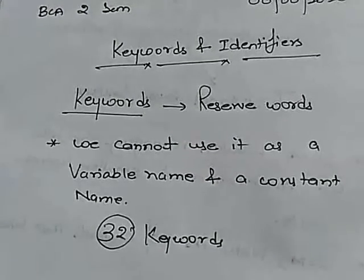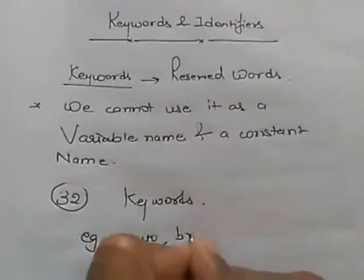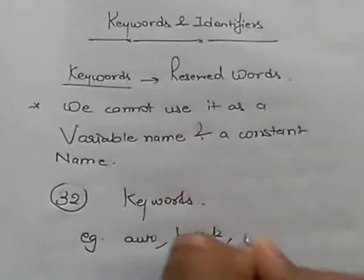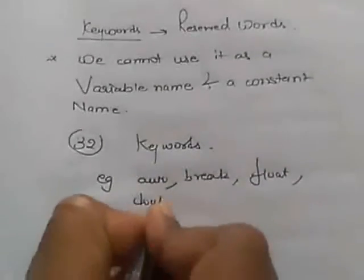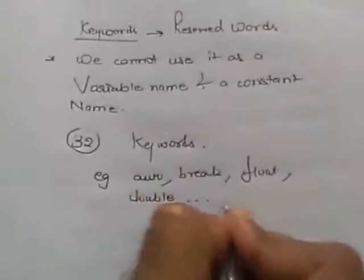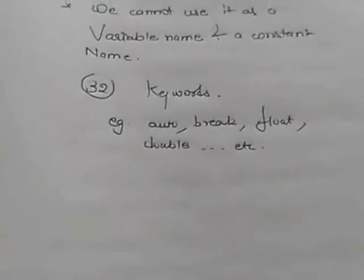For example, auto, break, float, double, etc. These are the keywords. Now, we will study about identifiers.